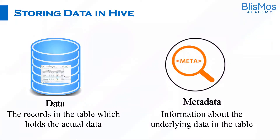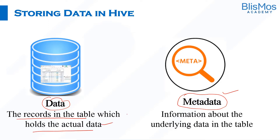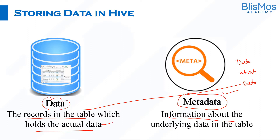When we talk about the data in Hive, there are two aspects. One is the data — these are the actual records in the table which holds the actual data. The second one is the metadata. As we always say, it is the data about data, or in other words, the information about the underlying data in the table.